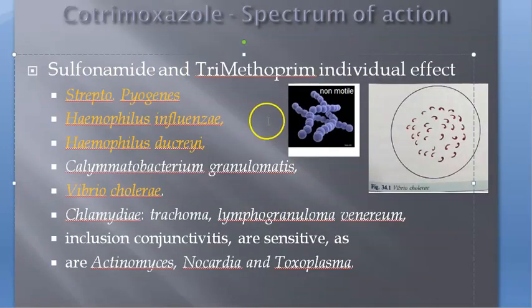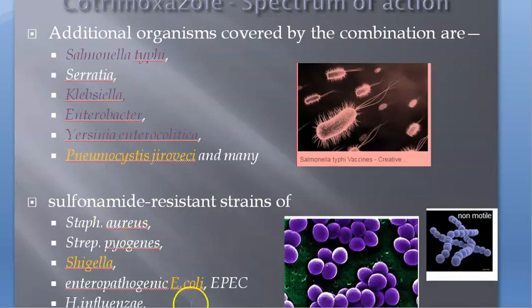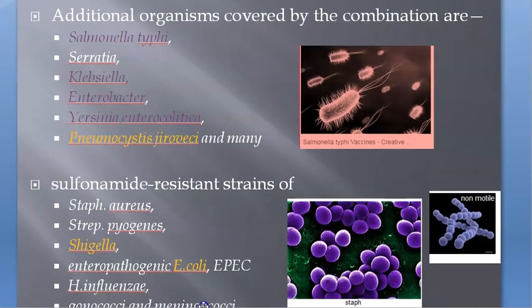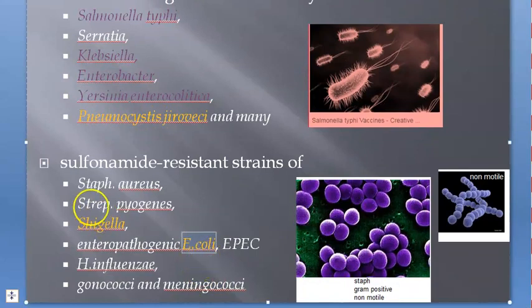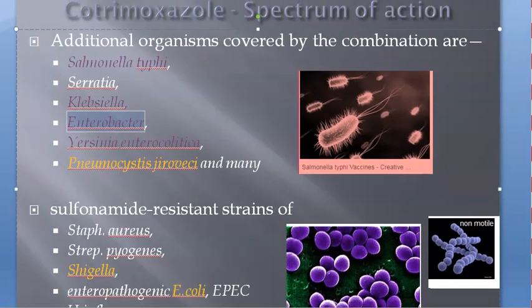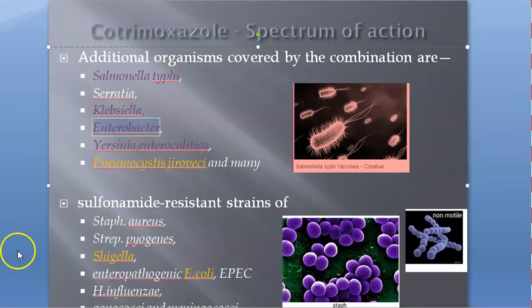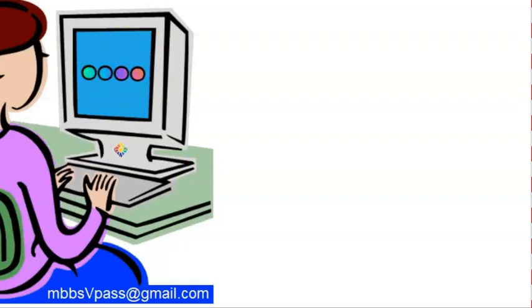This works against so many bacteria, but what we're concerned about is it should work against E. coli, Klebsiella, and Enterobacter. It seems to be working against those. Prophylaxis means prevention, so for prevention you're giving Cotrimoxazole, Nitrofurantoin, etc.